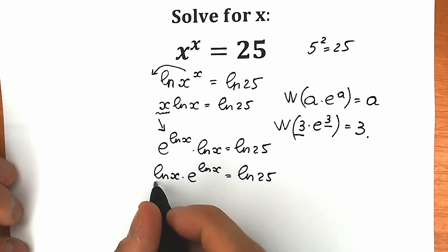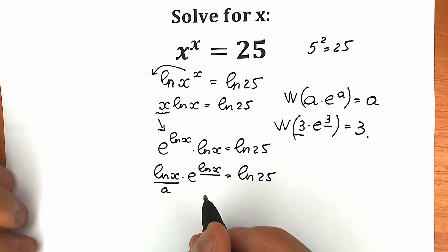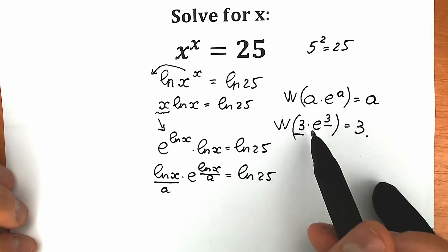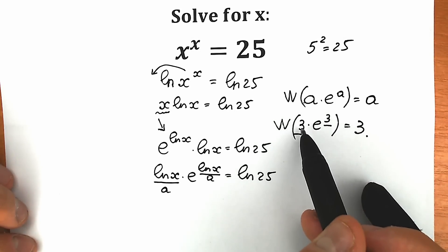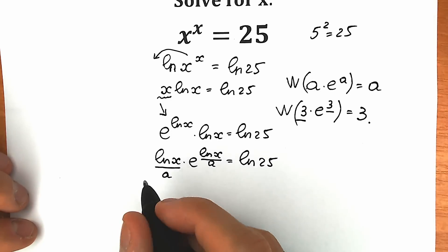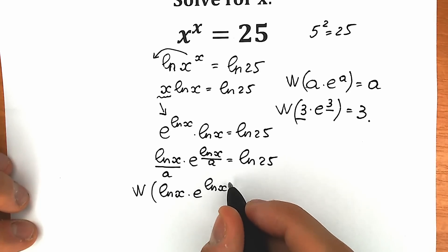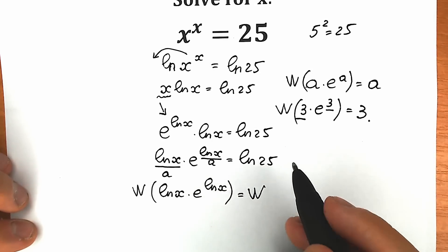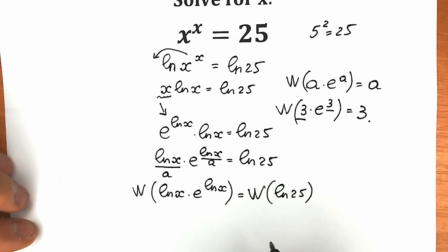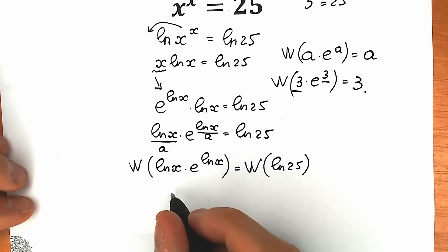Now let's look closely at what we have. We have absolutely the same expression in front and in the power of e. So if we call this natural log x simply a, then the power is also a. As a result we have a times e to the power a. When we explained the Lambert W function, we had a times e to the power a — and right here we have exactly that structure, so we can easily apply the Lambert W function. As a result, the left side gives us a, which is equal to natural log x.